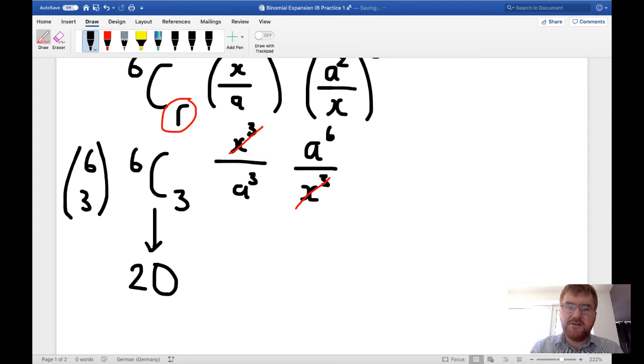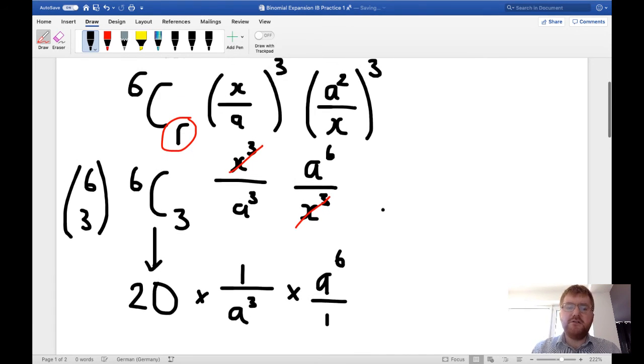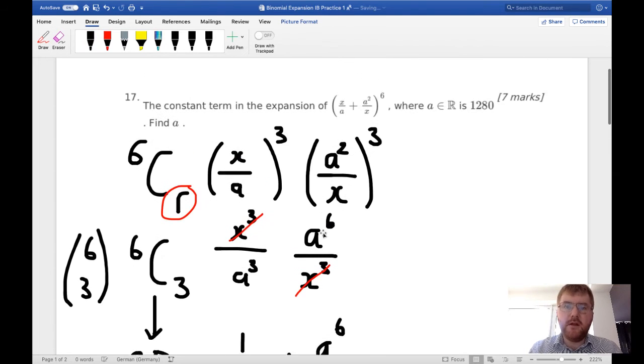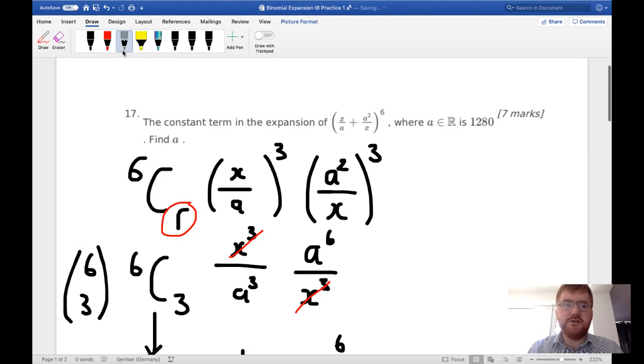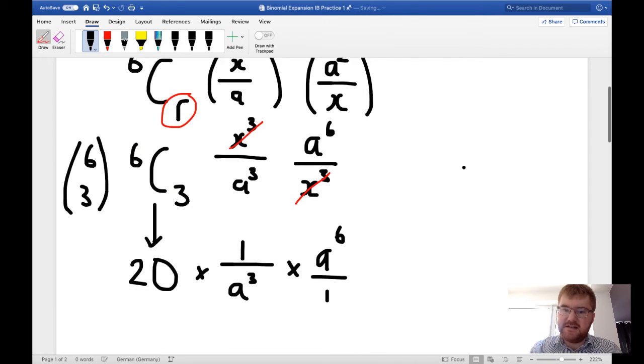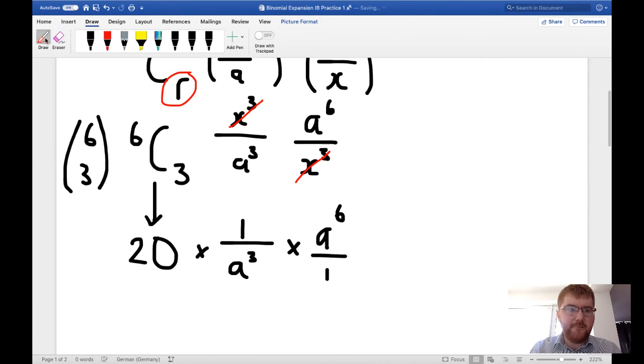As I said already, these two things cancel, that's exactly what we wanted, so they disappear. So we get times 1 over a³ times, well this is just a⁶, because x³ cancels. And we're told in the question this constant term, which is what it is, is equal to 1280. So this whole thing here is equal to 1280.